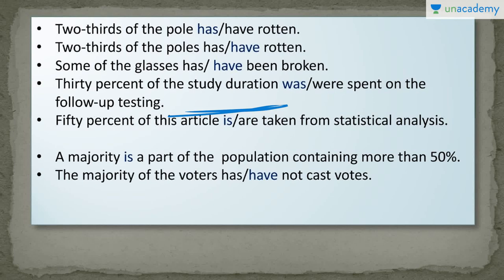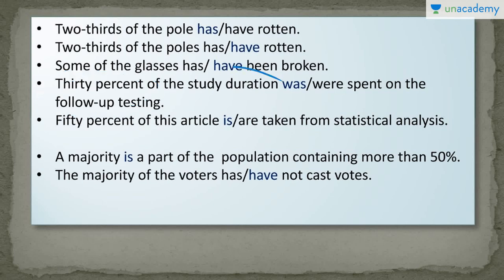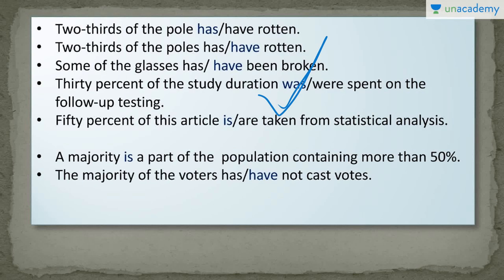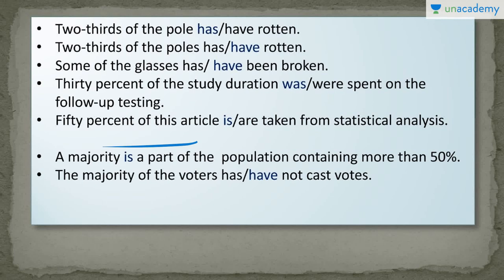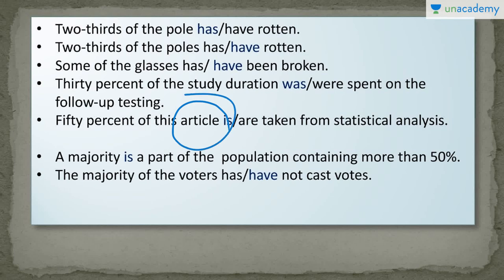'30% of the study duration was or were spent on the follow-up testing?' The sentence starts with a percent, so the noun after 'of' is the main subject. Here the main subject is 'study duration,' which is singular, so I choose 'was.' The correct sentence is: '30% of the study duration was spent on the follow-up testing.' Next: '50% of this article is or are taken from statistical analysis?' Again, the sentence starts with percent, so the main subject is 'article,' which is singular. I choose 'is,' and the correct sentence is: '50% of this article is taken from statistical analysis.'